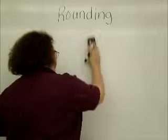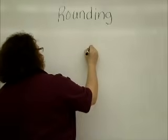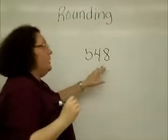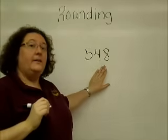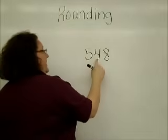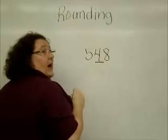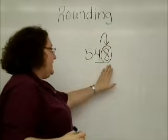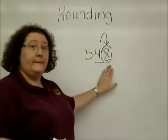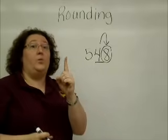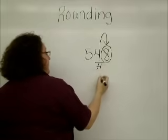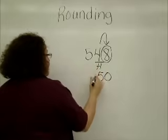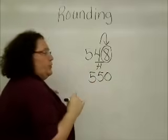Let's do another one. I'm rounding to the nearest ten. I find my place: ones, tens. I go to my neighbor next door and I have an eight. Eight tells me to add one more, so I add one to the four and it becomes a five. The eight becomes a zero, and the five in front comes right down unchanged.